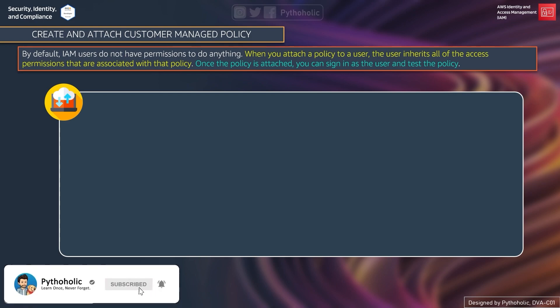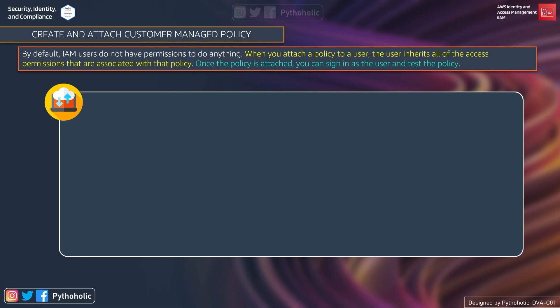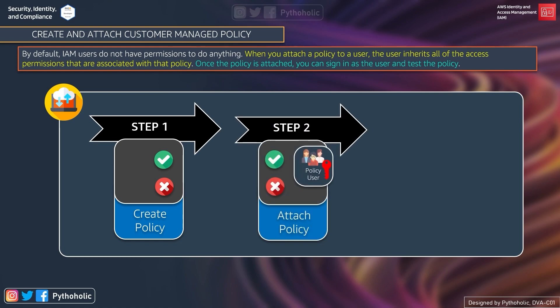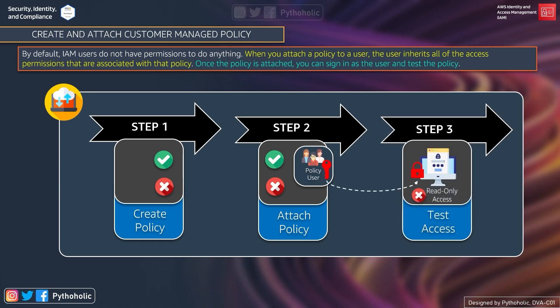Now let's see an example of how we can allow a user to access the AWS Management Console with read-only permissions. The first step is to create the customer managed policy that allows any attached user to sign in to the console. The second step is to attach the policy — when you attach a policy to a user, the user inherits all associated permissions. The last step is to test the access, where the user signs in as the IAM user and tests the policy.